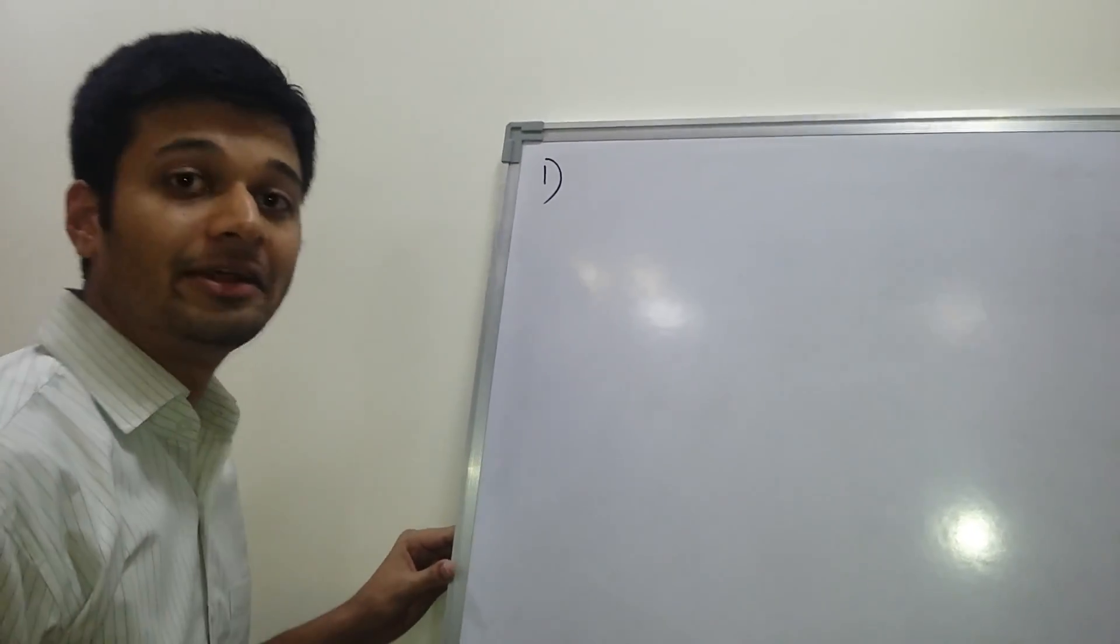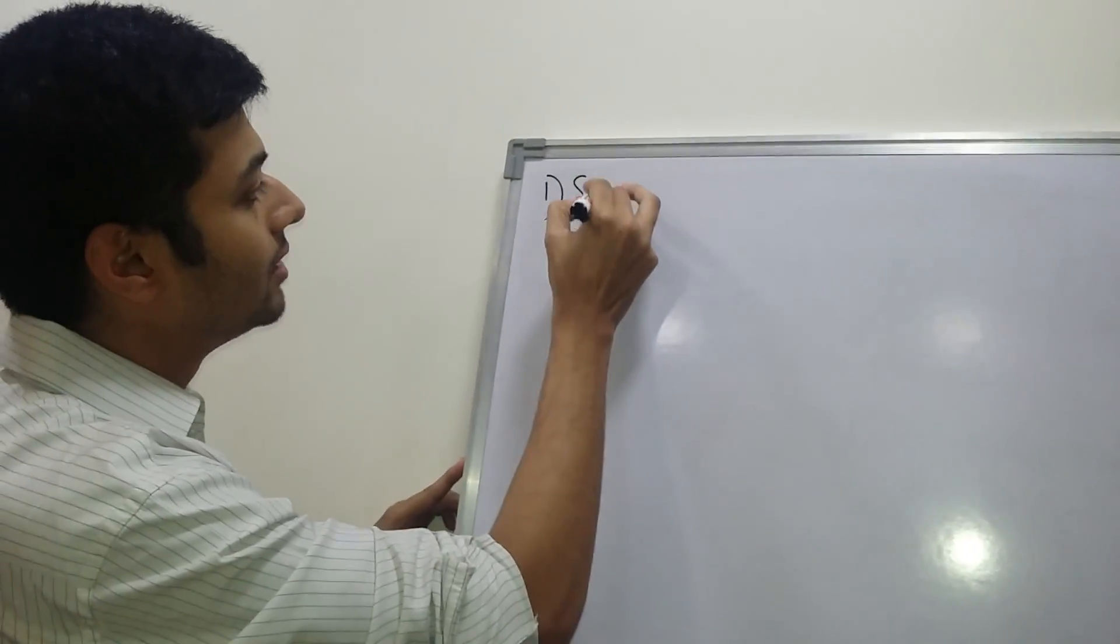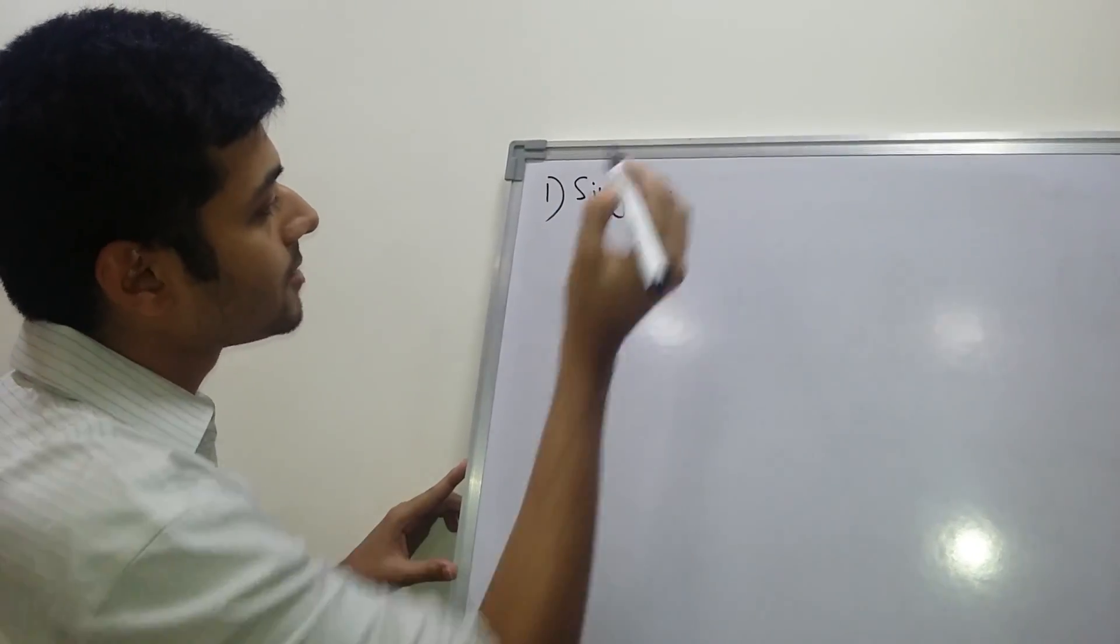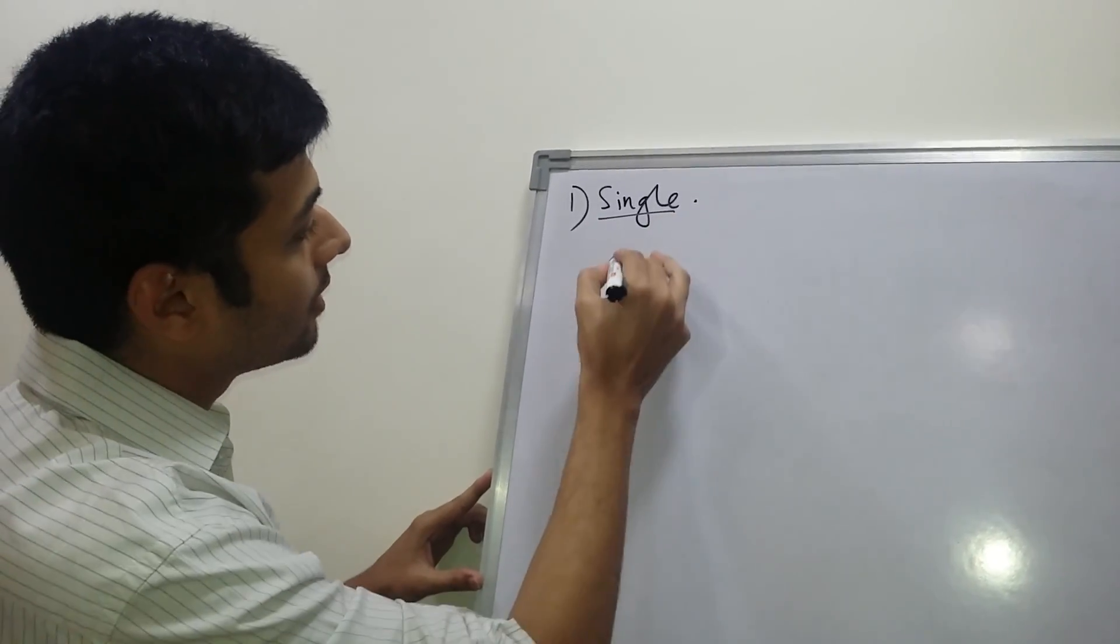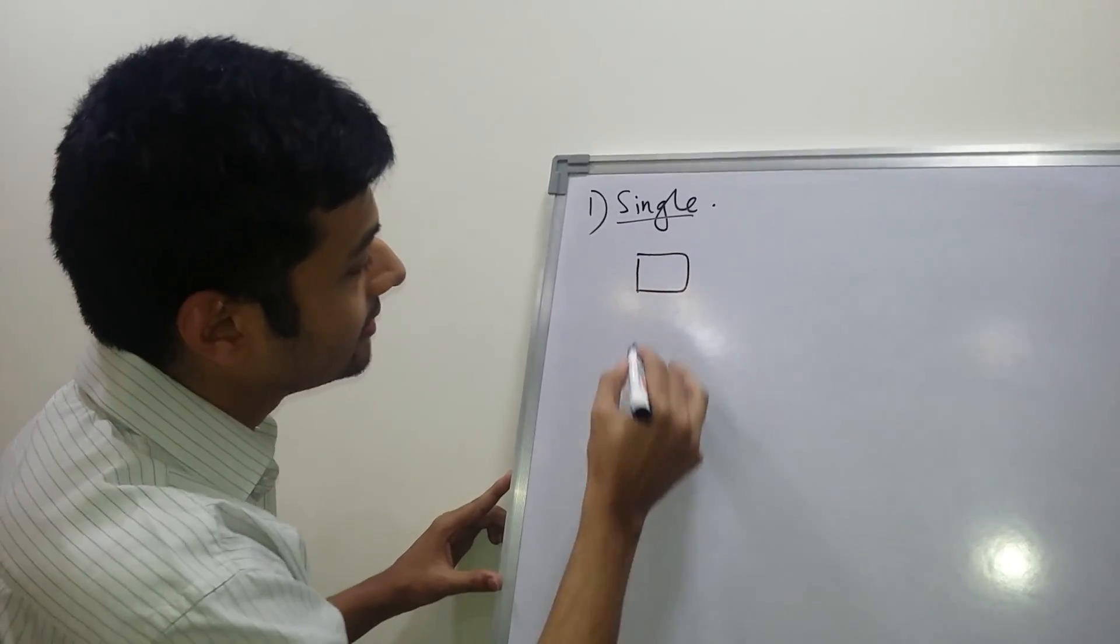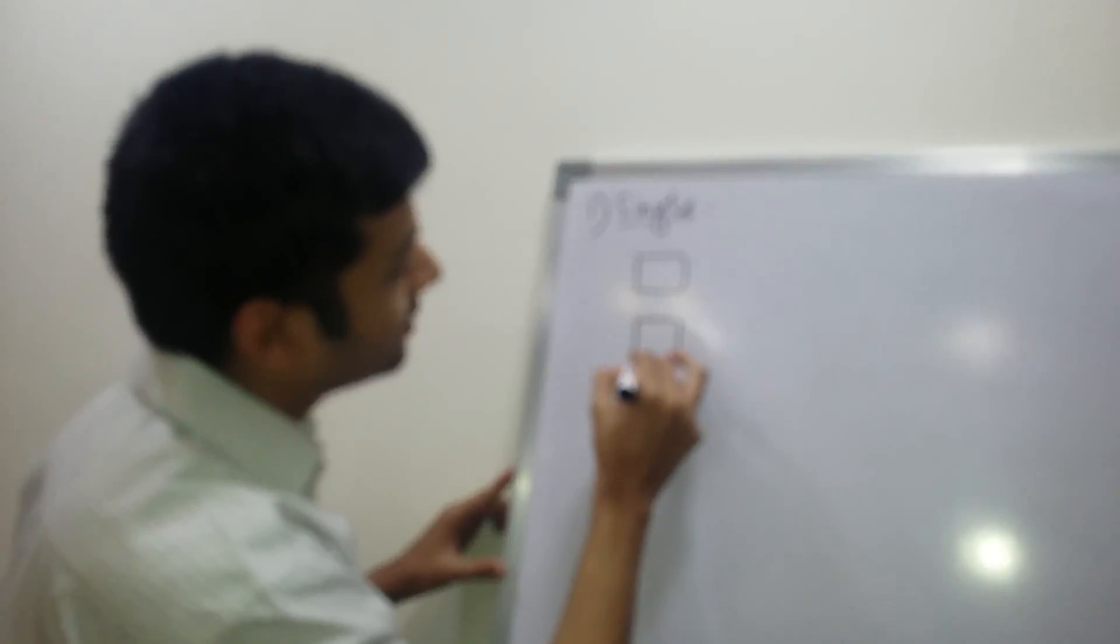The first one is single inheritance, single level. In single, there is one base class and one derived class.